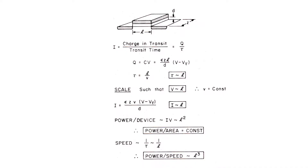This is a slide I showed at that 1968 workshop, and it's a very simple slide. It says the charge in transit is whatever charge you put on the gate to turn the transistor on. And the current is that charge divided by the transit time. The transit time is just the length — how far it has to go — divided by the velocity.